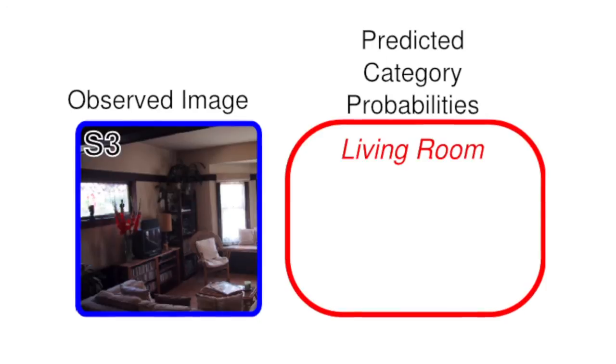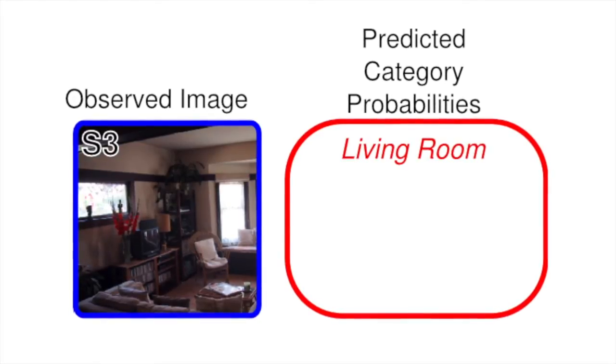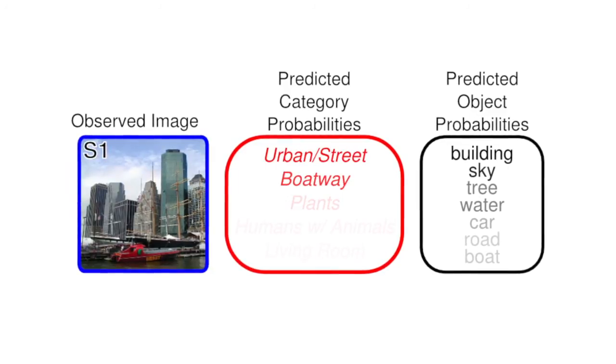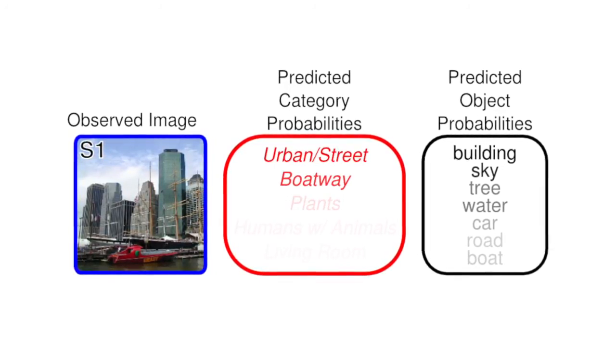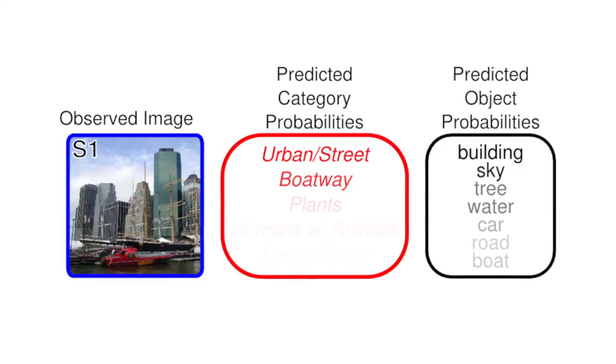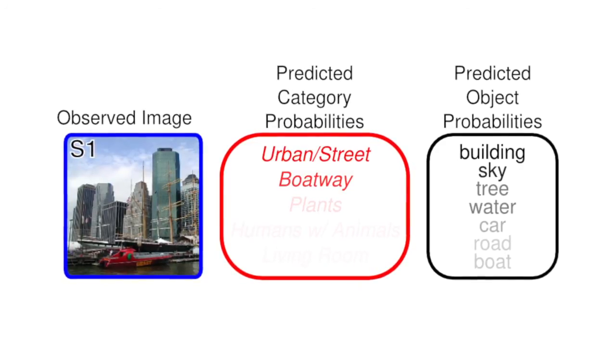Here is a second example decoded from a second subject. The decoder indicates that the scene is likely a member of the living room category. You may recall that the learned scene categories are defined in terms of the probabilities of objects occurring in scenes belonging to those categories. Using this information, we can extend the decoder in order to predict the likelihood of individual objects occurring in each of the decoded scenes. Here is an example of objects predicted for the urban boatway scene shown earlier. Label saturation indicates the probability that the viewed scene contains each object. For this scene, the decoder predicts that the most likely objects are a building, a boat, and so on. These objects either occur in the specific scene, or they are consistent with the scene context. We find that we can accurately decode scene categories and individual objects in a diverse range of natural scenes.